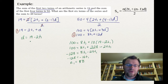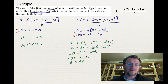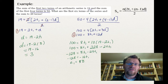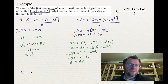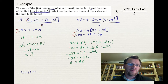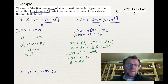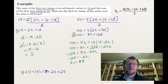Now plugging T1 = 8 back in: D = 19 − 2(8) = 19 − 16 = 3. The first six terms of the series are: 8 + 11 + 14 + 17 + 20 + 23. A quick check: 8 + 11 = 19 ✓ and the first four terms sum to 50 ✓. We found T1 and D by creating two equations and using substitution.